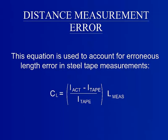Erroneous length error is the most common form of systematic error. It is accounted for using this equation: Length correction equals the difference between the actual tape length and the tape length reading all over the tape length reading multiplied by the total length measured.